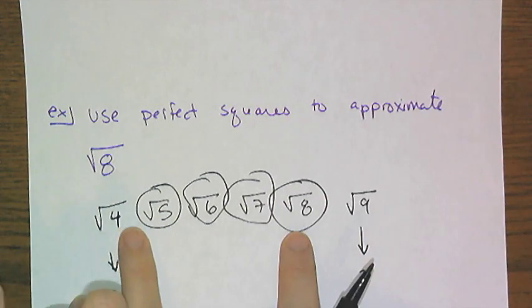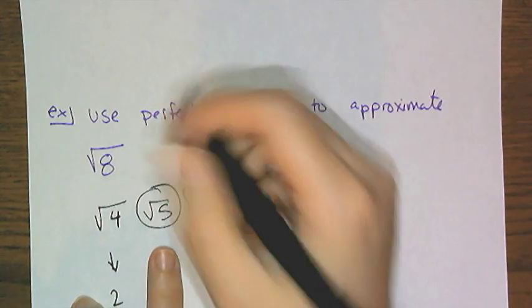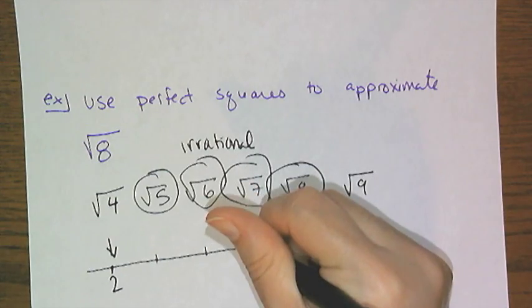These have decimal approximations which go on forever and ever and ever and never repeat. And remember, these numbers are called irrational.